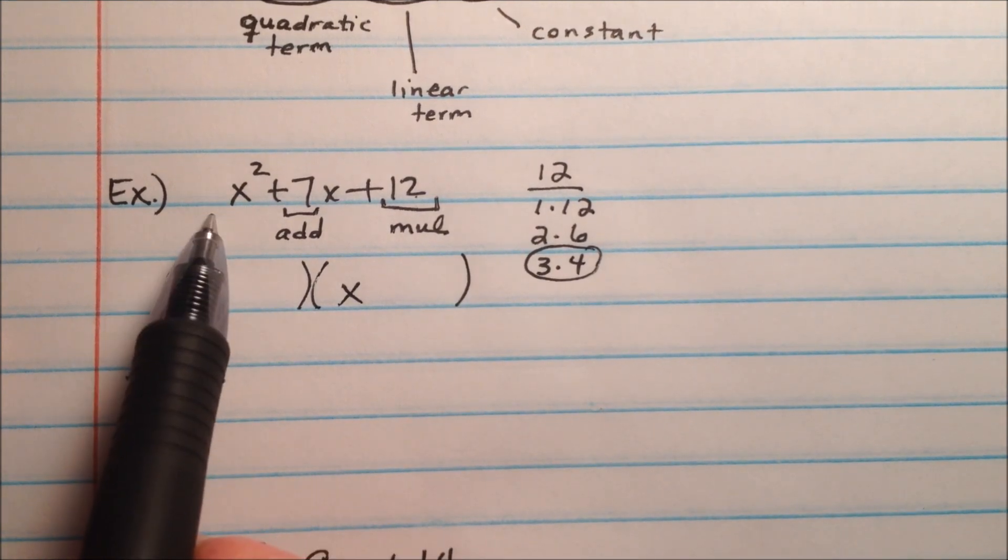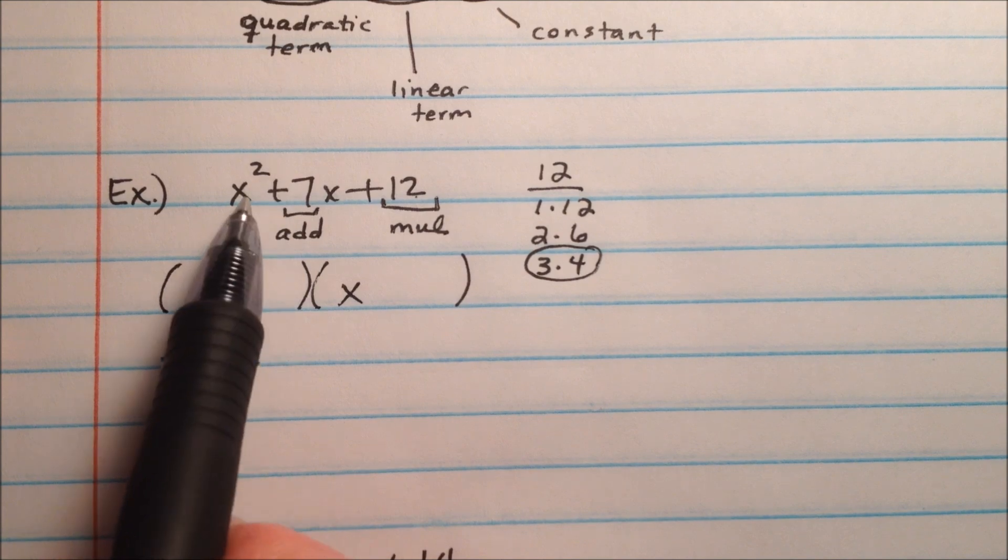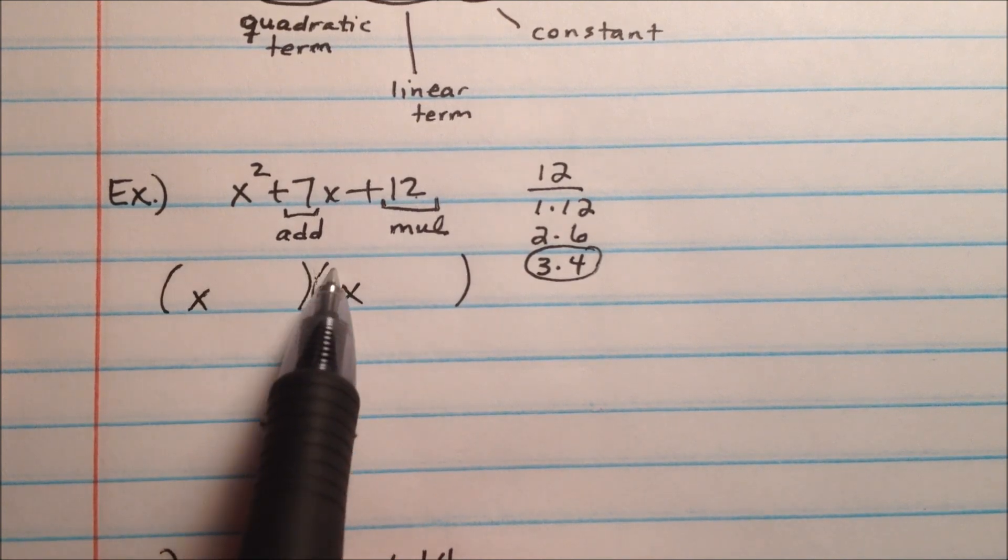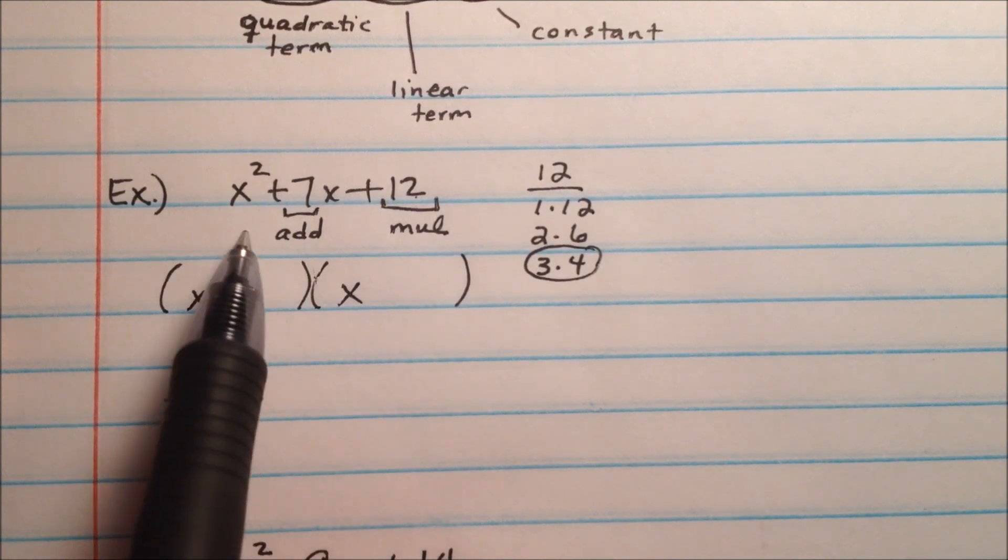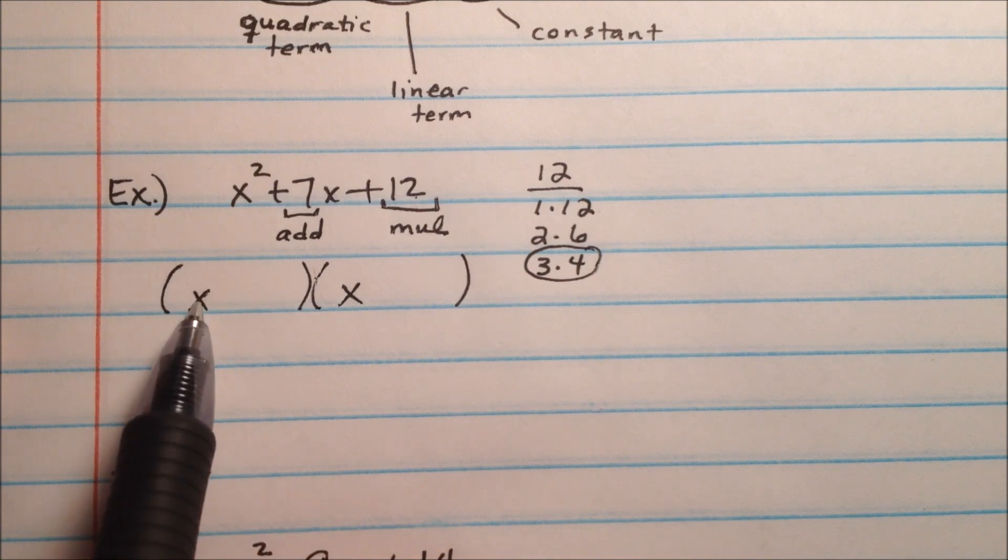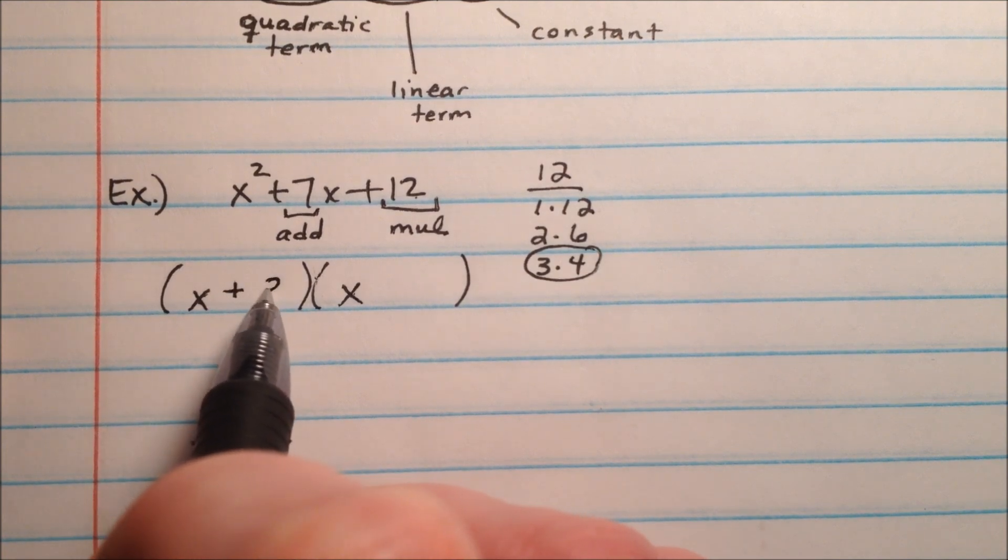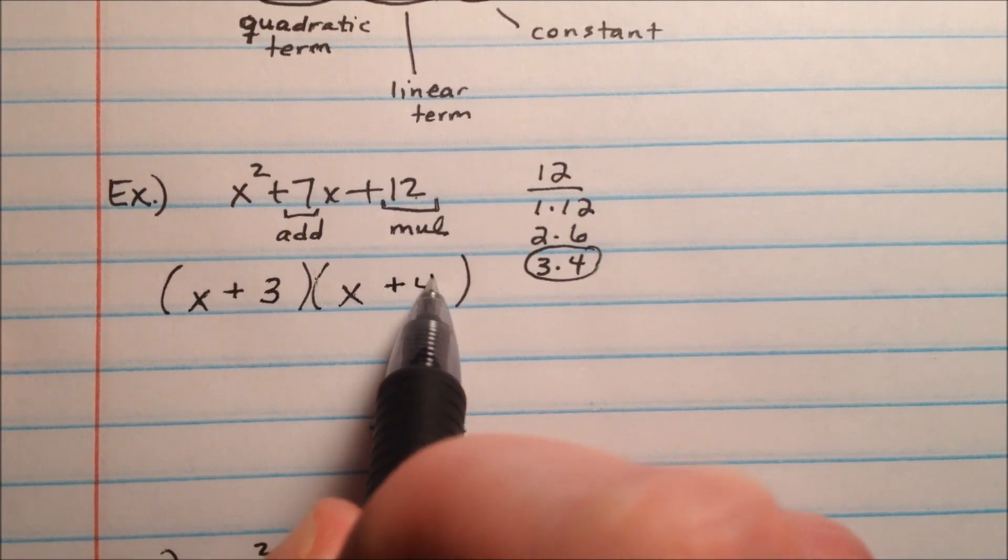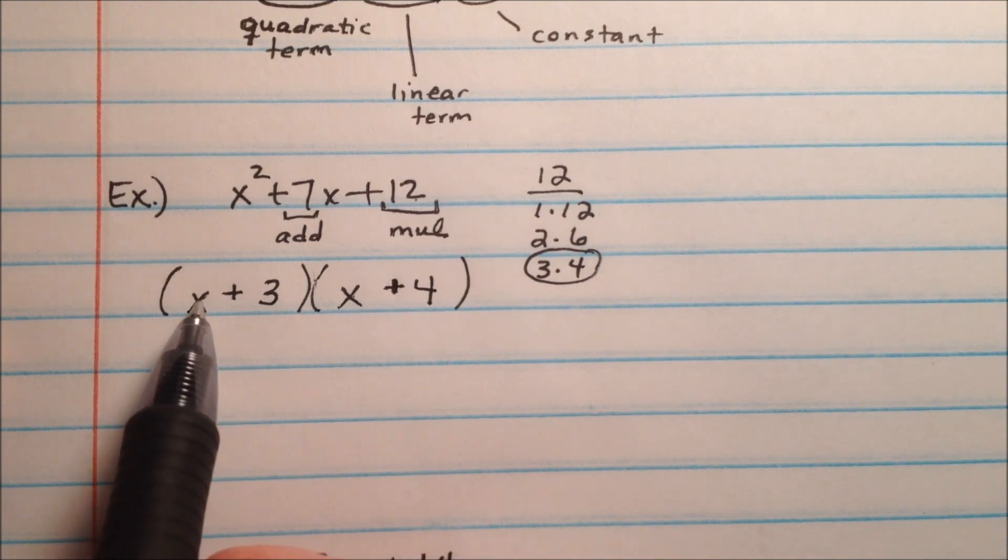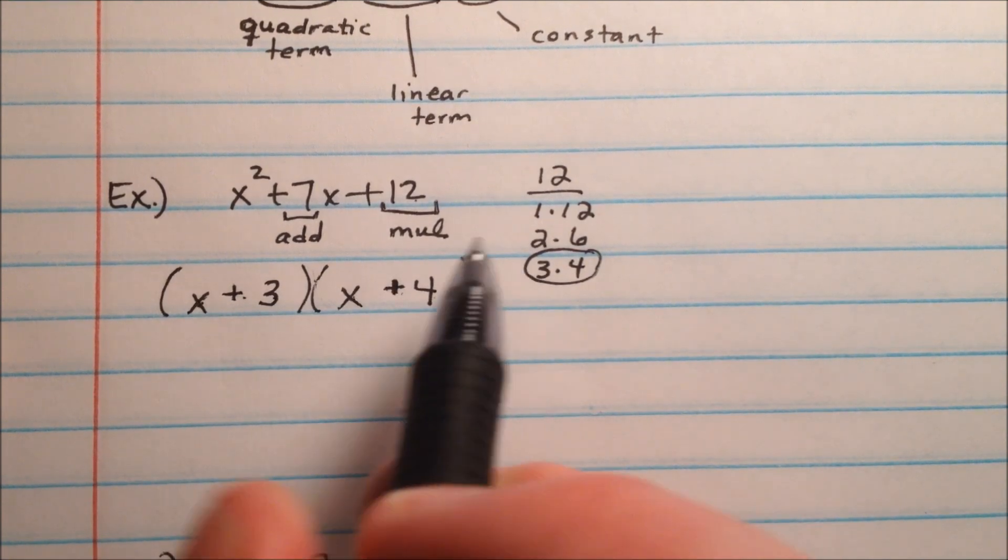As long as, again, this a value is 1, and there's no coefficient in front of our x squared, we're going to set it up with two sets of parentheses, and whatever variable this is, we're going to drop it down right there, x and x. So what happens next is we said our numbers that we're going to work with are 3 and 4, and they're positive 3 and positive 4, so I'm going to put x plus 3 and x plus 4.